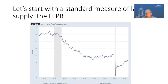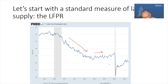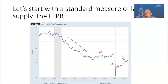Let's start with a basic measure of labor supply: the labor force participation rate. This is the number of people employed plus the number unemployed, divided by the civilian labor force. Pre-pandemic, there was a general downward trend, stabilizing around 63% of the civilian non-institutional population. At the very beginning of the pandemic, there was a sharp downward drop of about three percentage points. Post-pandemic, we've recovered about half of that. But in about the last eight or nine months, it has stabilized — we haven't seen a big bounce back in the participation rate despite a super strong labor market.